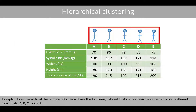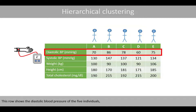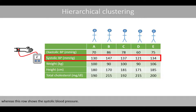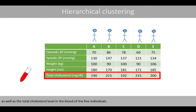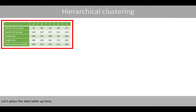To explain how hierarchical clustering works, we'll use a dataset that comes from measurements on five different individuals: A, B, C, D, and E. This row shows the diastolic blood pressure of the five individuals, whereas this row shows the systolic blood pressure. We also have data on the body weights in kilos and body heights in centimeters, as well as the total cholesterol level in the blood of the five individuals.